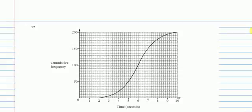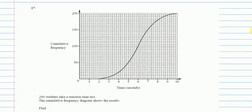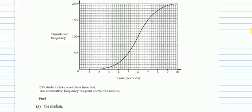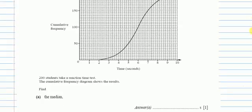All right, question number 17. We are given a cumulative frequency to time graph. Total number of students is 200 and they have shown us the results. What do we have to find?